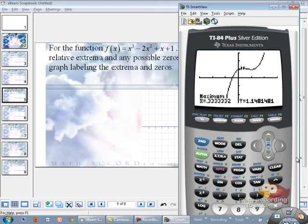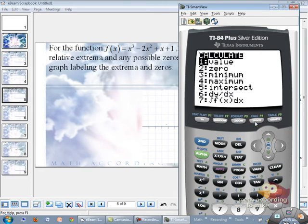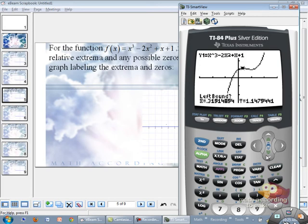We're going to do the same thing for a minimum. We're going to go to second calc. And this time we're going to select minimum. And it asks you the same thing. Left bound, right bound.